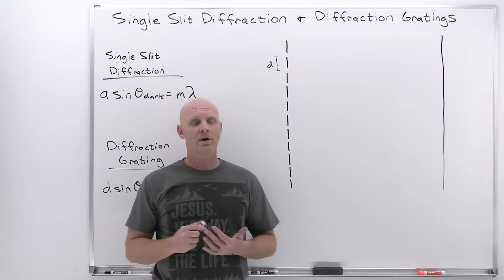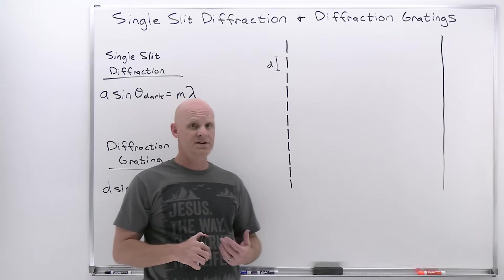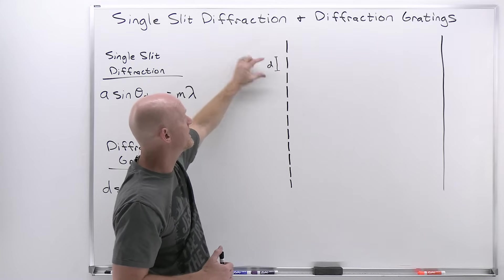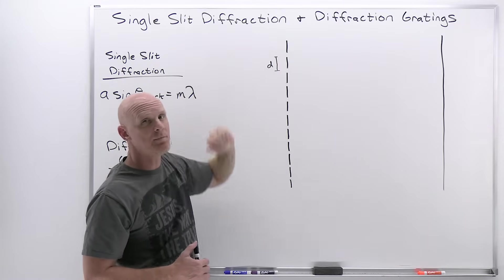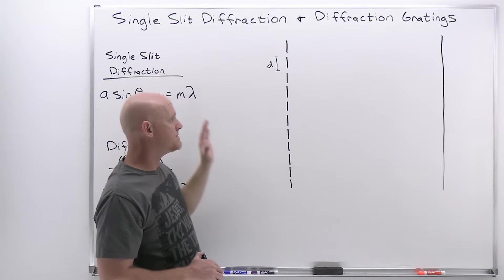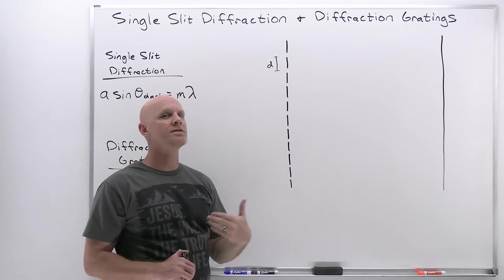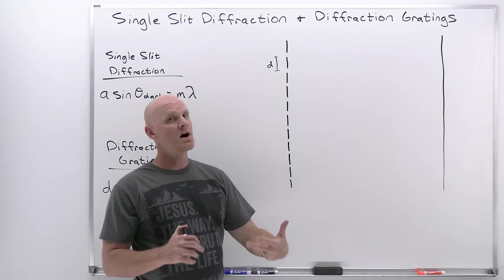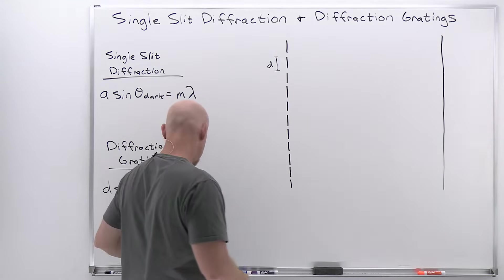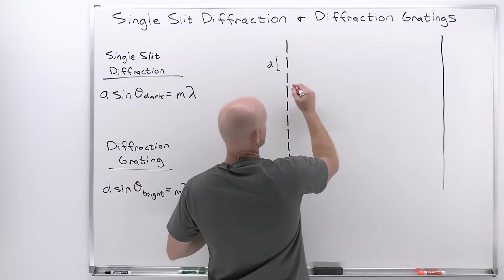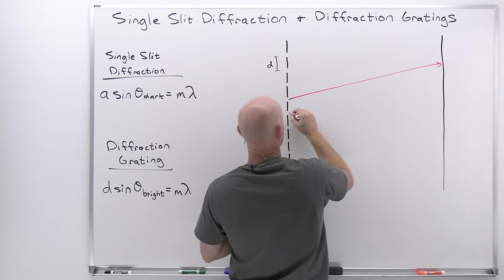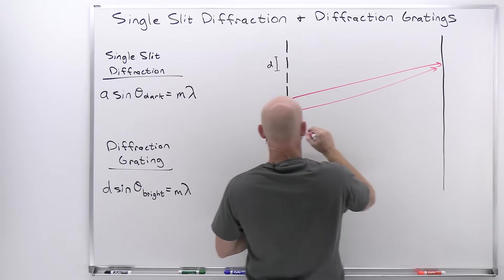Now we'll take a look at diffraction gratings. A diffraction grating has many, many slits that are a fixed distance D apart. Light passes through multiple slits, all traveling from multiple different slits to a common location and possibly resulting in interference.